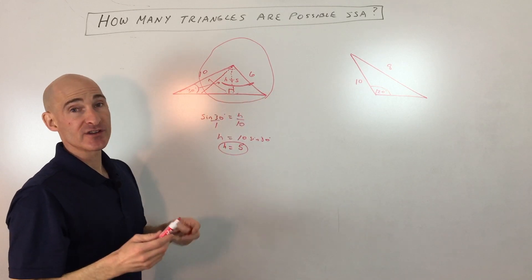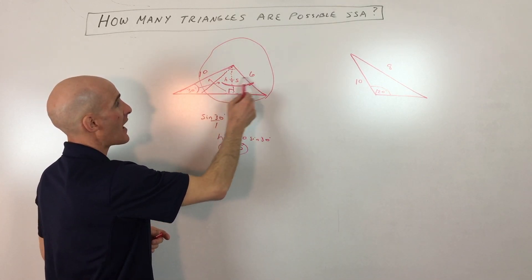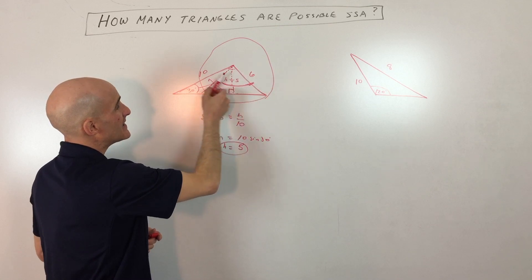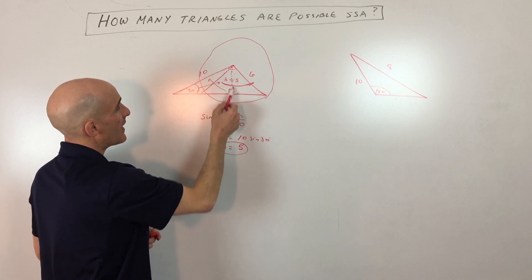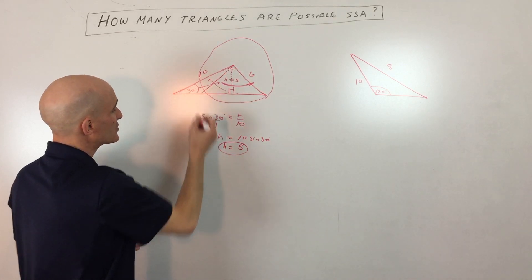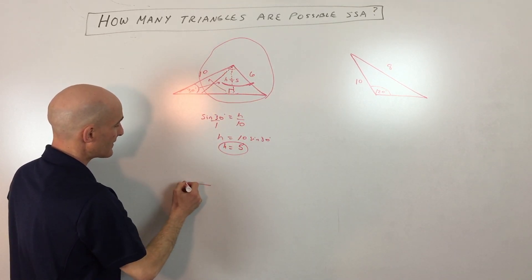What we have here is a special scenario where the side opposite the acute angle is in between—6 is in between the altitude and the side adjacent, between 5 and 10. So we can construct this triangle that looks something like this.